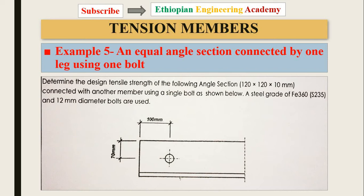In this video I will show Example 5, about an equal angle section connected by one leg using one bolt. The question is: determine the tensile strength of the following angle section connected with another member using a single bolt, as shown. A steel grade with 12 millimeter diameter bolts is used. Please follow attentively — there may be slight differences from the plate examples in previous videos.